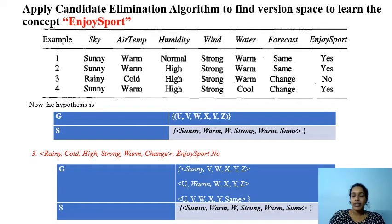This next training instance is a negative instance. Let's check whether we could reject this third instance using G and S. Here in G, any value for attribute is possible to accept, so we have to make appropriate specialization.